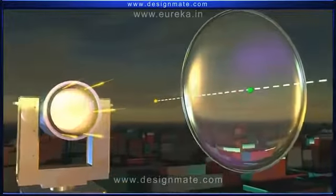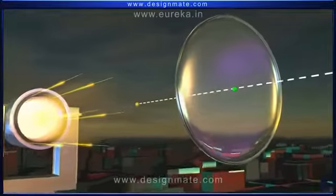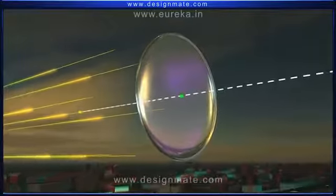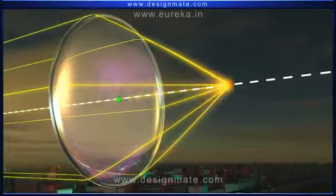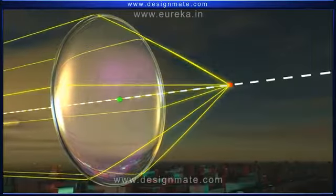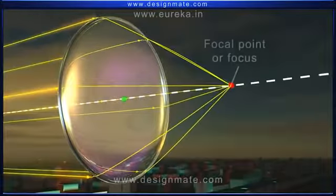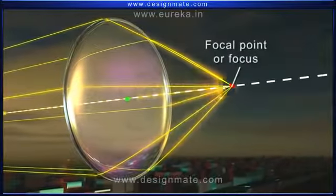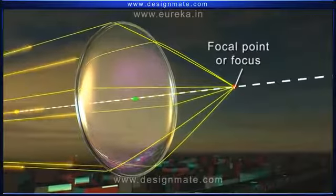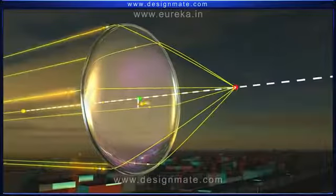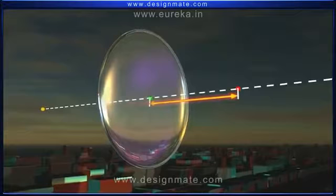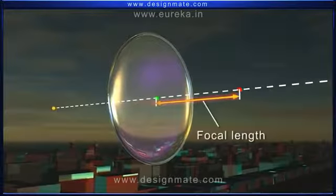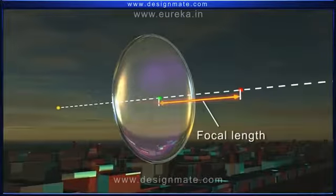The light rays parallel to the principal axis and incident on one side of the lens undergo refraction and converge at a point on the principal axis on the other side. This point is called the focal point or focus of the lens. The distance from the optical center of the lens to the focal point is called the focal length of the lens.